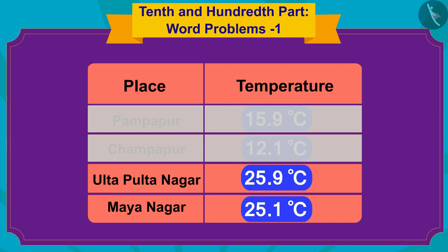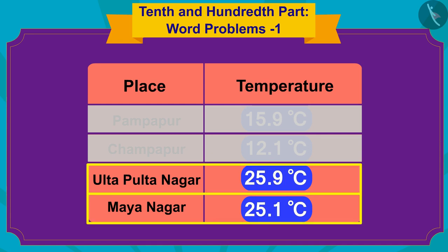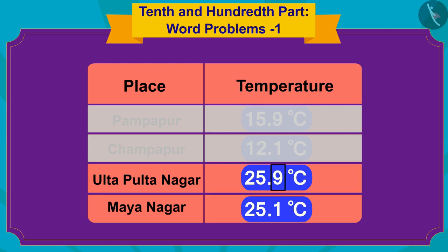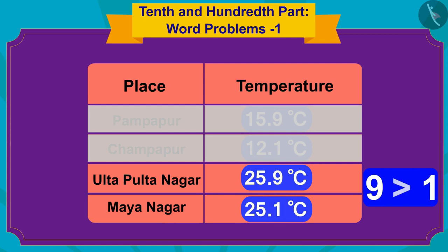The units place of temperatures in both Ulta Pulta Nagar and Maya Nagar have the number five. Therefore, we will now compare the numbers written in the tenth places after the decimal point. The number in the tenth place in the temperature of Ulta Pulta Nagar is nine, and that in the tenth place of Maya Nagar is one. Since nine is more than one...